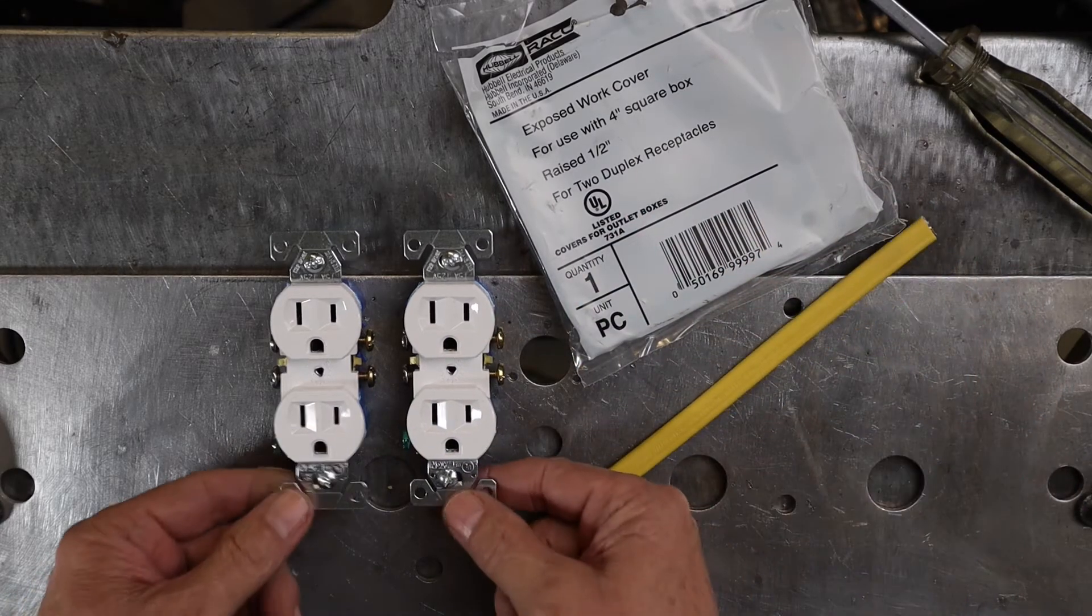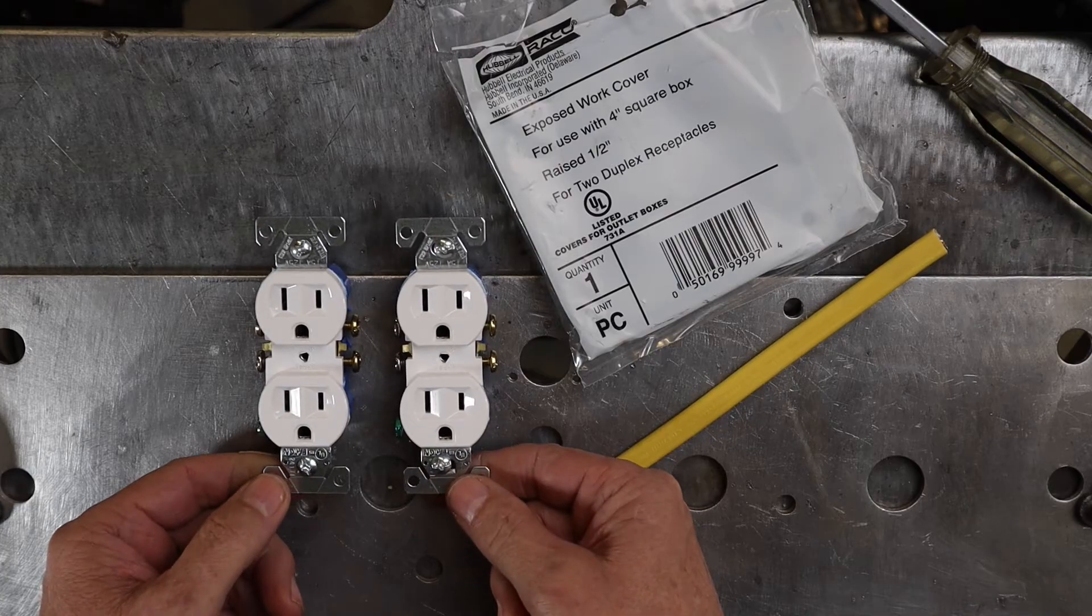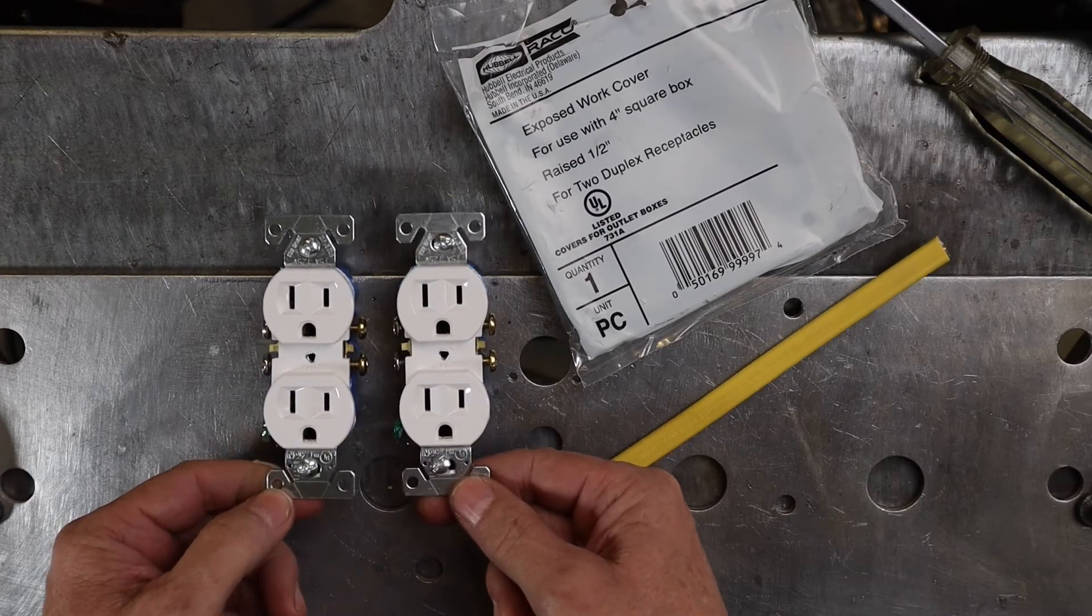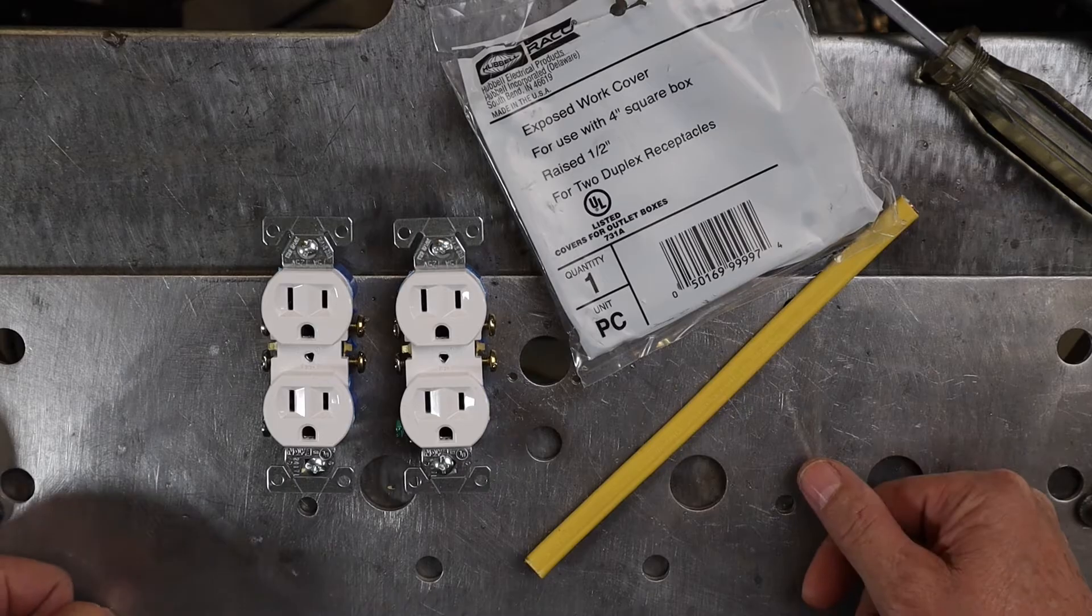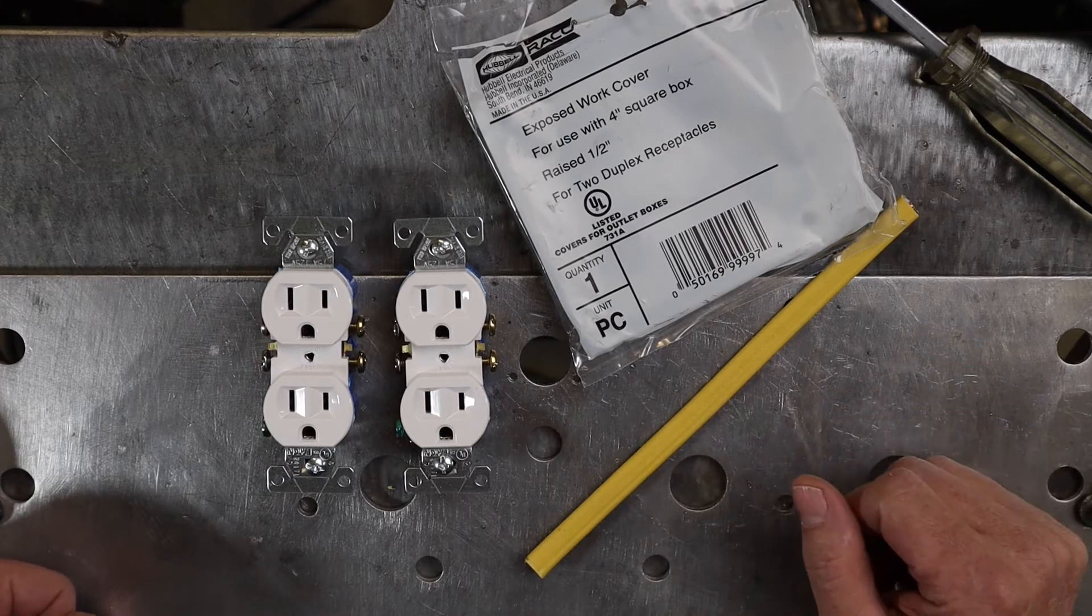What I'm going to do is wire them both separately with pigtails off of the main incoming power. So I'm going to show you how I'm going to do that as far as wiring a double duplex outlet.